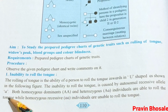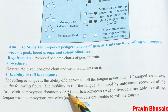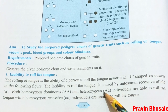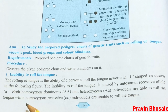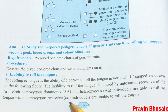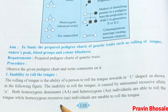If the person has capital A capital A (homozygous dominant) or capital A small a (heterozygous condition), the person will roll the tongue because capital A is dominant. If the person has small a small a, the person won't be able to roll the tongue — that is homozygous recessive.